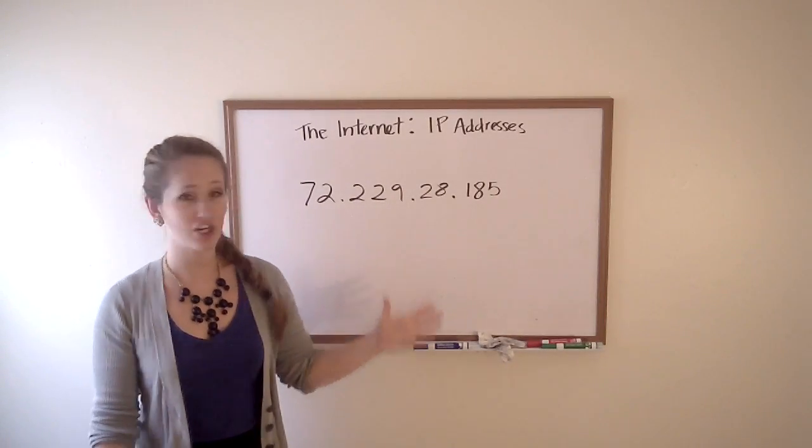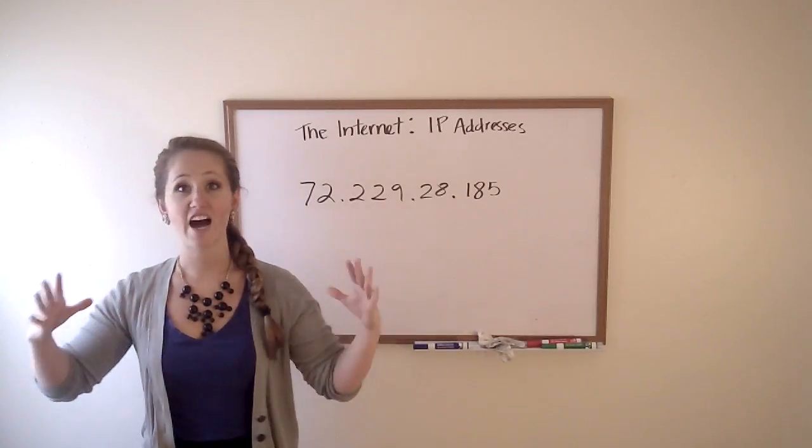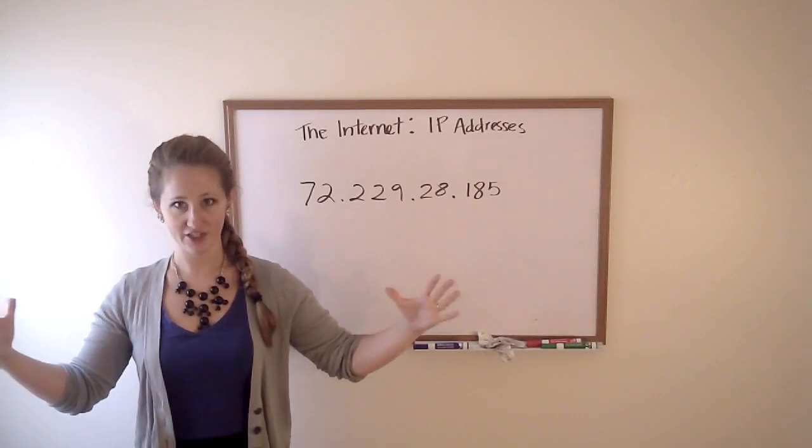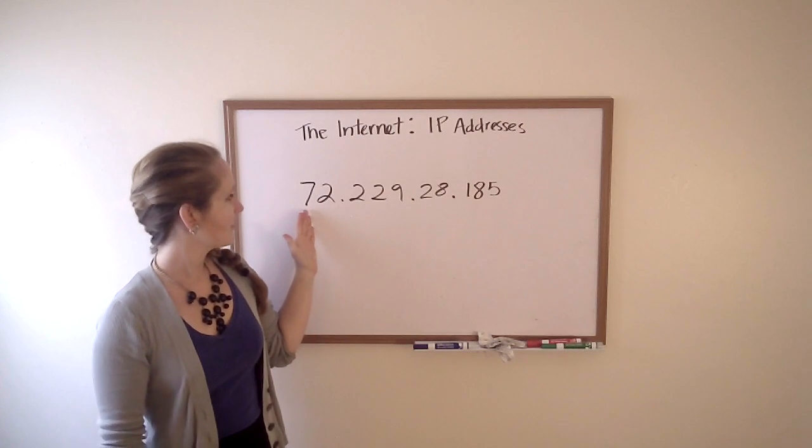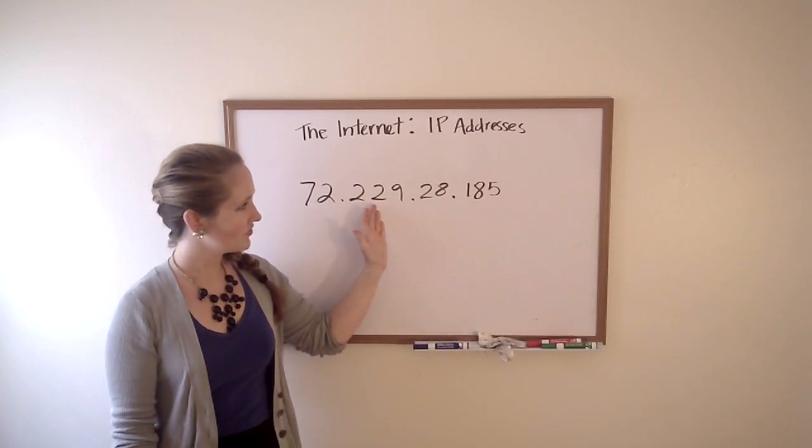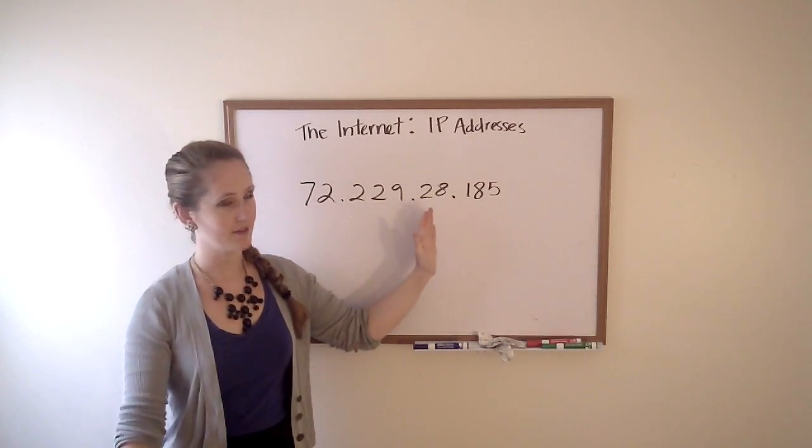IP addresses are determined based on location, starting in five big international regions. That's on this side. As you get down the line, each of these numbers brings you to a more specific location.